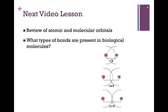That concludes our studies in Chapter 1 and our basic introduction to the science of biochemistry. Our next lesson will begin our studies in Chapter 2 with a brief review of atomic and molecular orbitals. We'll also consider the types of bonds that are present in biological molecules and their relative strengths.